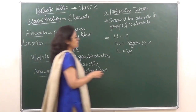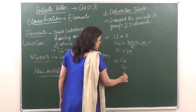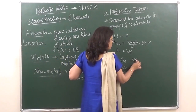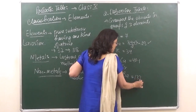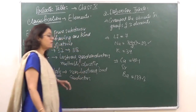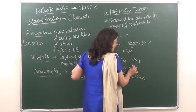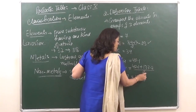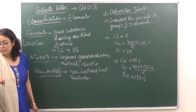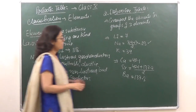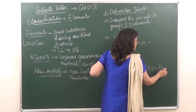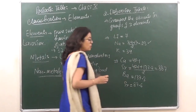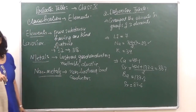Another triad was calcium, strontium, and barium. The atomic mass of calcium is 40.1 and that of barium is 137.3. So the expected atomic mass of strontium should be (40 + 137.3) / 2 = 88.7, and the actual atomic mass of strontium was 87.6 — very close, so this triad was also successful.